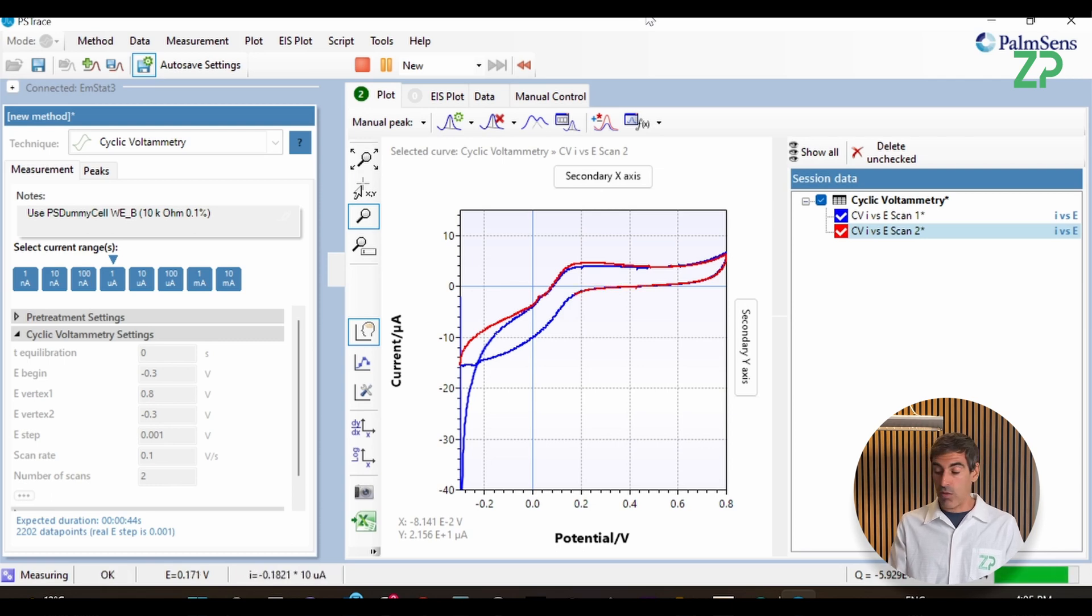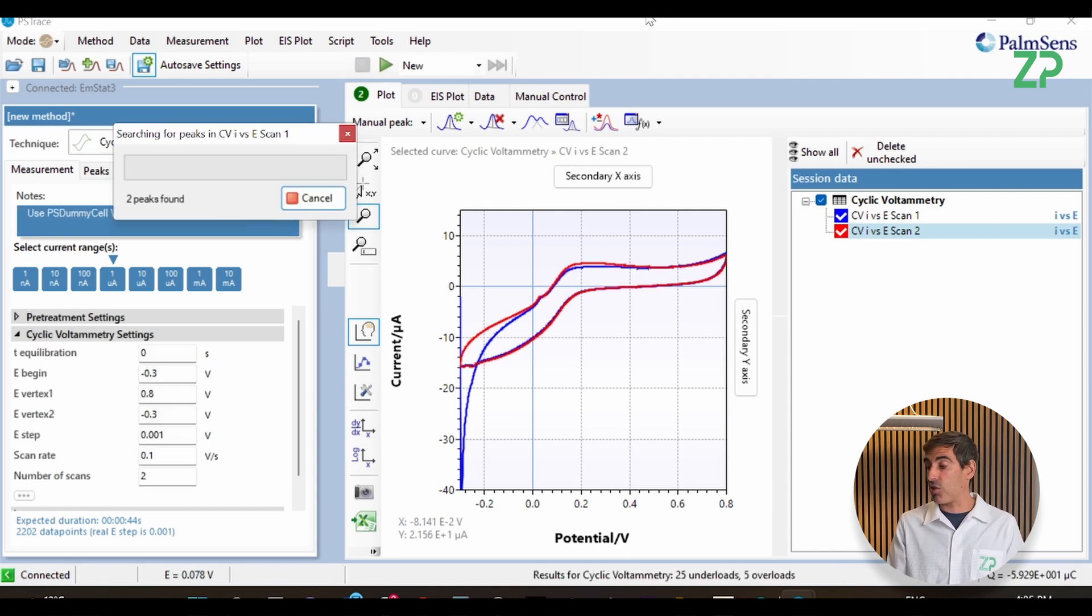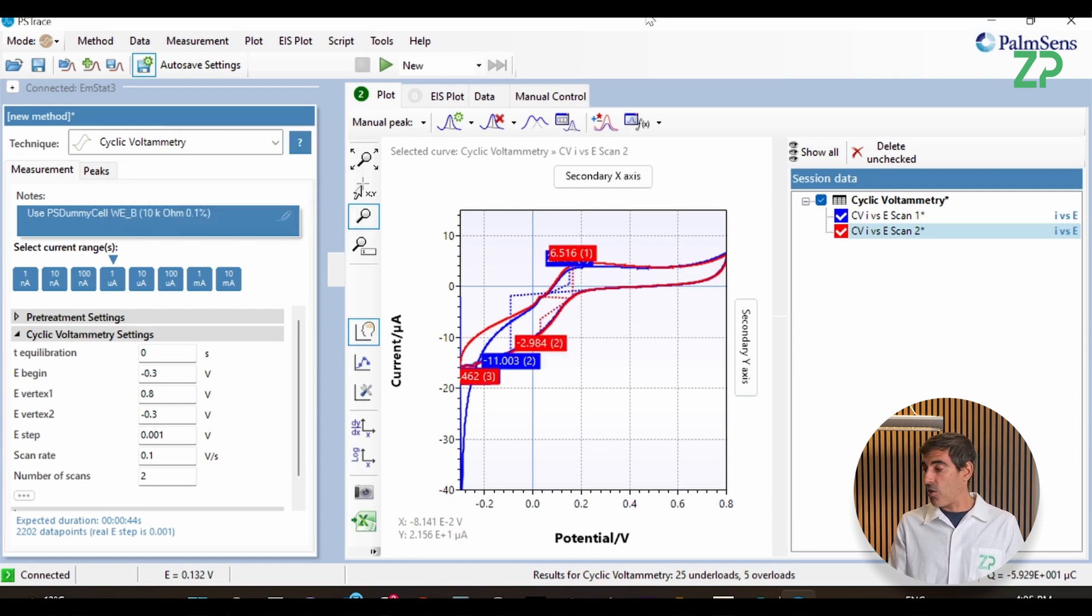Or you could run, for example, if it's a potentiometric sensor, you could run a constant current or no current at all and just measure the open circuit potential. So I think this was a quite successful demo. Here you could literally see the oxidation and a little bit of the reduction peak. So it's a redox reaction.